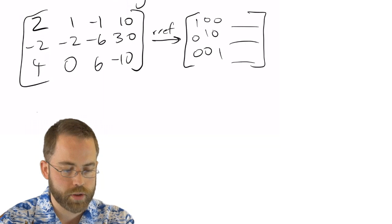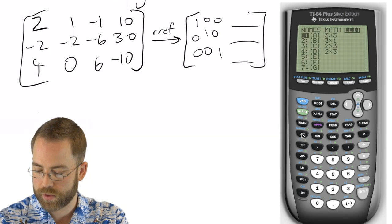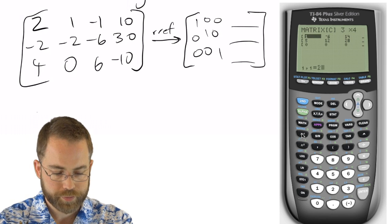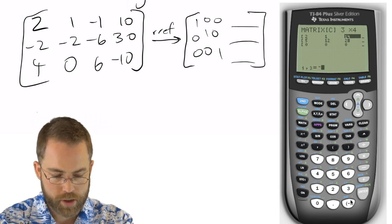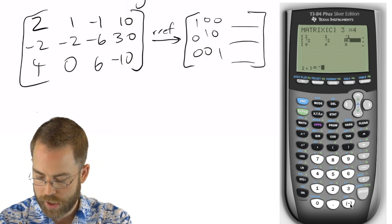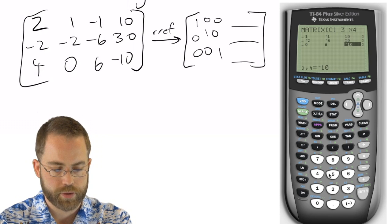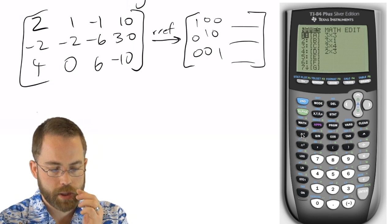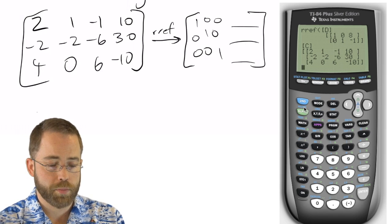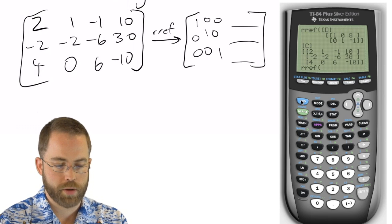So if I go into the calculator and I say second matrix edit, and I edit matrix C to be a 3 by 4 with entries 2, 1, negative 1, 10, negative 2, negative 2, negative 6, 30, 4, 0, 6, negative 10. And I double check myself by saying matrix name C, and that looks to be exactly right. And now if I do matrix math, and I'm going to go up there as a quicker way to get to RREF, and I want to do that on matrix name C,